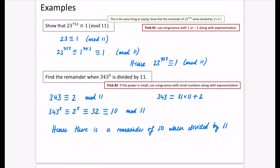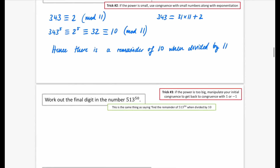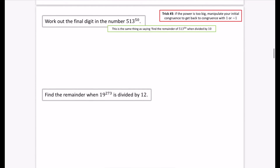Big number — make it what it's actually congruent to. We can raise that small number because it was small, raise it to a small power, and then do some calculations with that. So now we're going to look at two examples that use a third trick: if the power is too big, manipulate your initial congruence to get back to a congruence with 1 or minus 1.